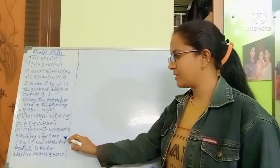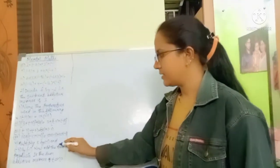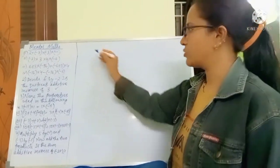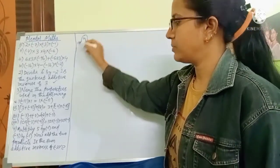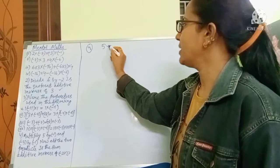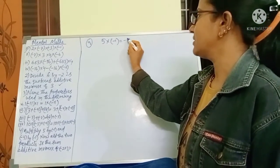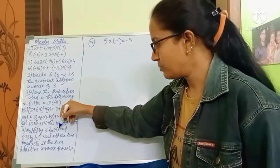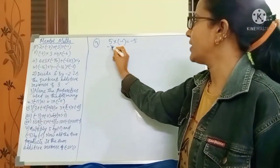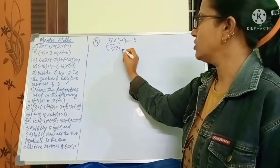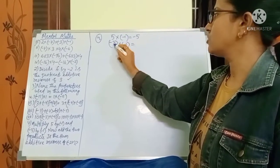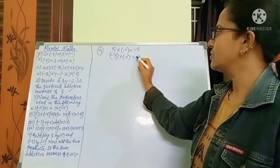The last part of the mental maths: multiply 5 by minus 1 — result is minus 5. Then multiply minus 3 by minus 1: minus into minus is plus, so 3 into 1 is 3, giving plus 3.